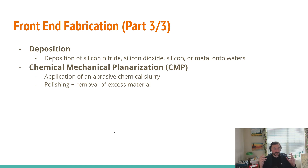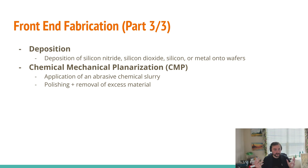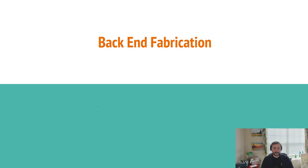All of these steps and processes may be repeated many, many times — on the order of 300 plus times. At the end of this, we have our piece of silicon covered in our circuits, which leads us to our next part: back-end manufacturing. How do we go from this round piece of silicon covered in circuits to the actual chips that are going to be put on a motherboard?